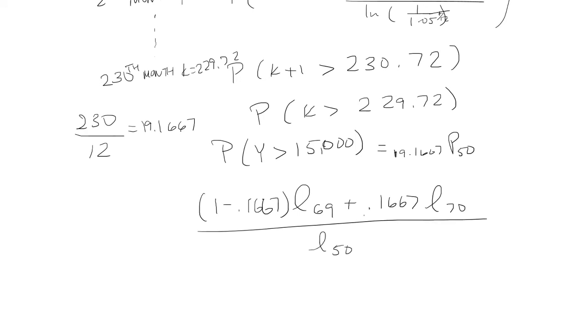We can find what L of 50, 69, and 70 are based on the table. And when we do that and then simplify we end up getting 0.9312 as the final answer. Thank you.